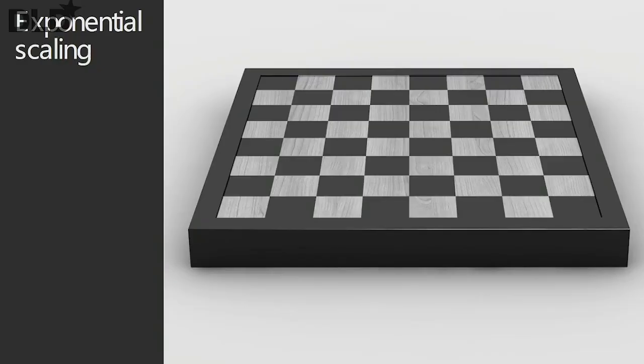Exponential scaling is really the trick for quantum computers, and it's hard to imagine. Let me illustrate it with a famous story. A very smart man invented the game of chess and offered it as a present to an emperor. The emperor was delighted and offered in return a wish. The inventor had a humble desire: he wished for one grain of rice for the first square of the checkerboard, then doubled the amount for each subsequent square.